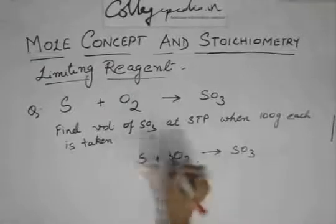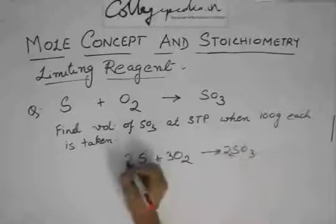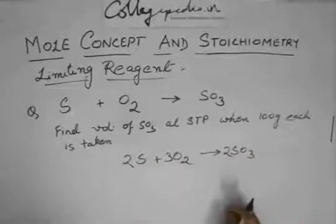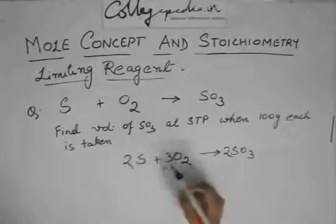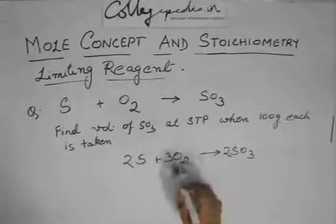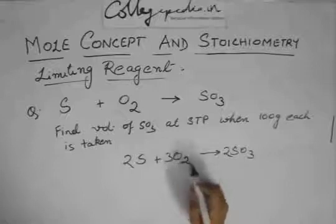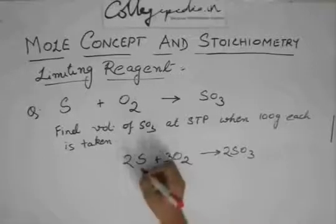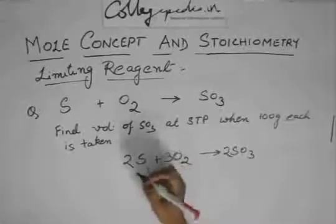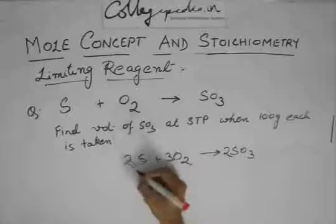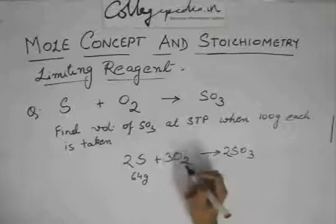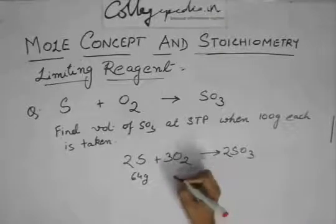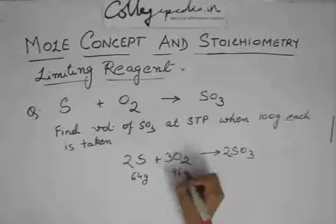This will be 3O2, this will be 2, this will be 2. Now we know that 2 moles of sulfur react with 3 moles of oxygen. The atomic weight of sulfur is 32 gram. So 2 into 32, that is 64 grams, react with 3 into 32, that is 96 gram.